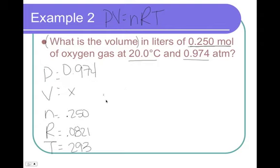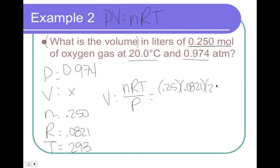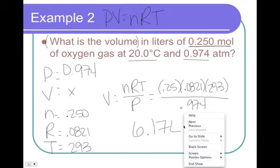So, rearrange this equation for volume and you get N, R, T, over P. N was 0.25, R, 0.0821, T is 293, divided by a pressure of 0.974. Get out your handy little calculator. Don't remember what the answer to this one is, to be perfectly honest with you. 0.25 times 0.0821 times 293 equals divided by 0.974. Gives us a grand total of 6.17 liters.